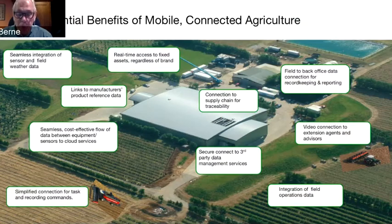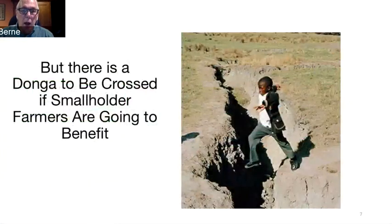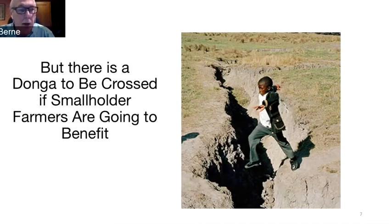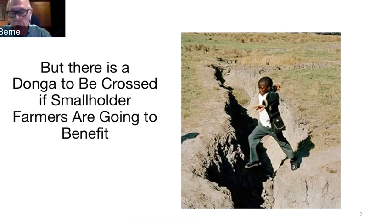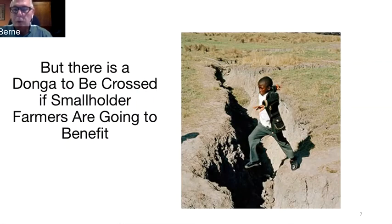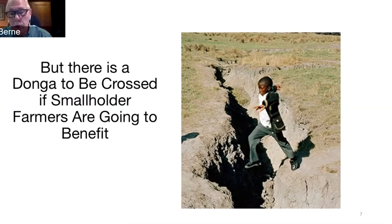So what does that mean for you if you're a smallholder farmer? There is what we call a donga to be crossed. The word donga came up during our training session in Centurion — it was a new word to me. I'm trained using a model from Jeffrey Moore, who has written several books about technology adoption and how it changes across the market lifecycle. He has a famous phrase called crossing a chasm, and donga is an appropriate term for something similar. Some things need to be in place if we're going to see the benefits of farmers adopting the use of data and getting full benefit from digital agriculture.